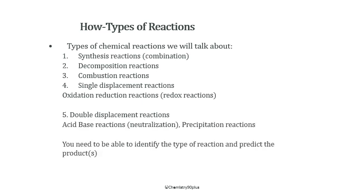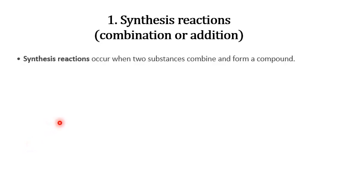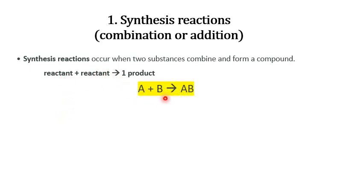You should know how to identify the type of reaction and how to predict the product under each type. A synthesis reaction occurs when two or more substances combine to form a single product. Reactant A and reactant B combine to give a single product AB. This is also called a combination reaction or addition reaction. This is the general formula you have to remember for synthesis or combination reactions.